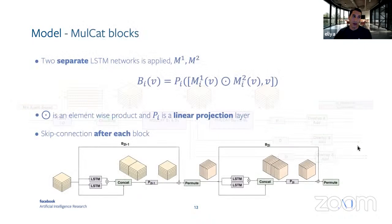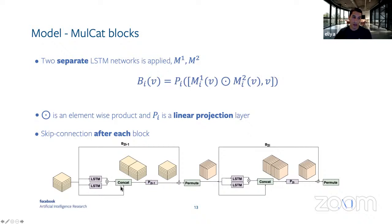The MulCat block consists of two separate LSTM networks, M1 and M2. We take the input tensor V, apply M1 and M2 networks, and do an element-wise product. We then concatenate the input tensor with this multiplication result, apply a linear projection PI, and get the output tensor. We also do a skip connection after each block. So basically, we have the input tensor, apply two LSTMs, multiply the output of each, concatenate the result with the input tensor, apply linear projection, and add the skip connection.